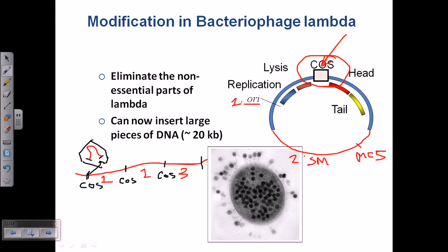That is the importance of the cos site being present. Because the cos site is present, the phage starts making this long chain of concatamer and then starts packaging the gene of interest inside the bacteriophage head. We can insert a large piece of DNA — approximately 20 kb — easily inside these phage vectors.